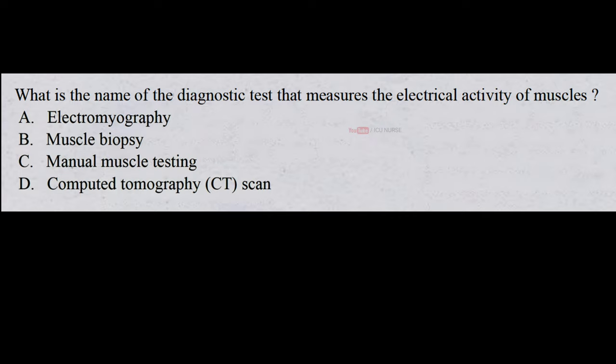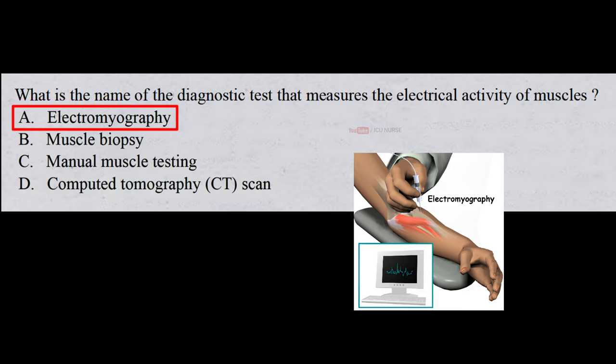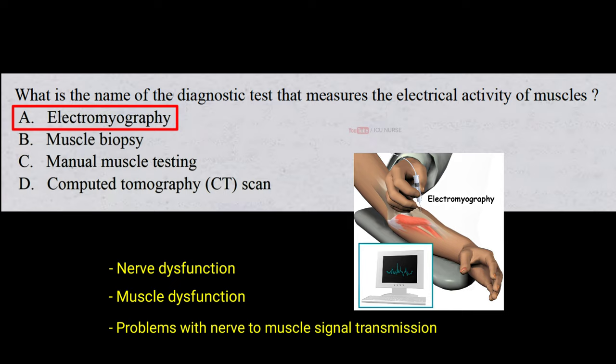What is the name of the diagnostic test that measures the electrical activity of muscles? A. Electromyography. B. Muscle biopsy. C. Manual muscle testing. D. Computed tomography scan. And the correct answer is A. Electromyography. Electromyography is a diagnostic procedure to assess the health of muscles and the nerve cells that control them. EMG results can reveal nerve dysfunction, muscle dysfunction, or problems with nerve-to-muscle signal transmission.